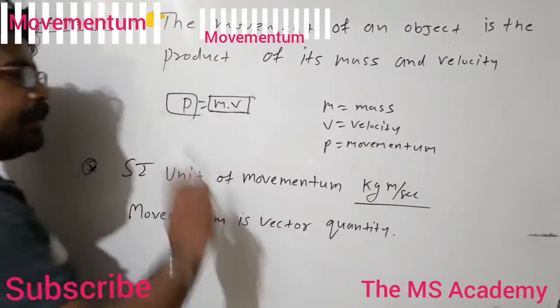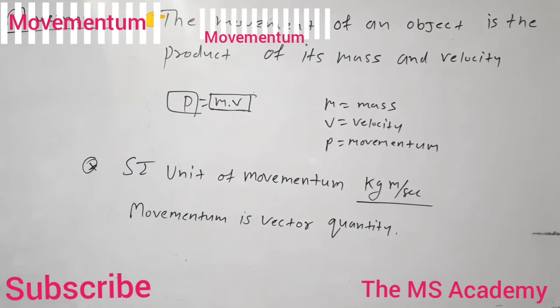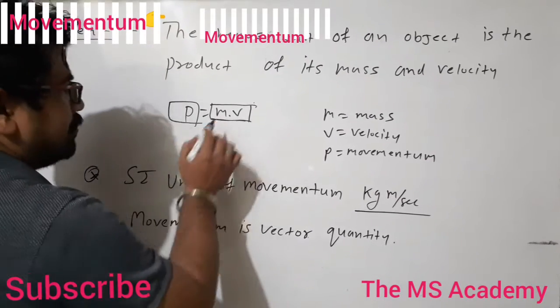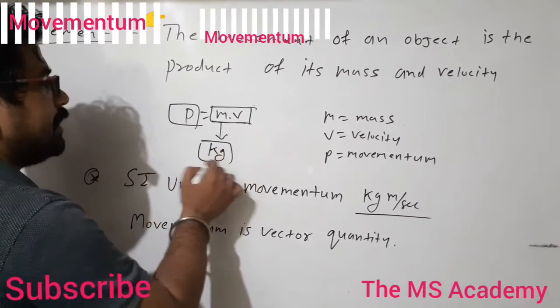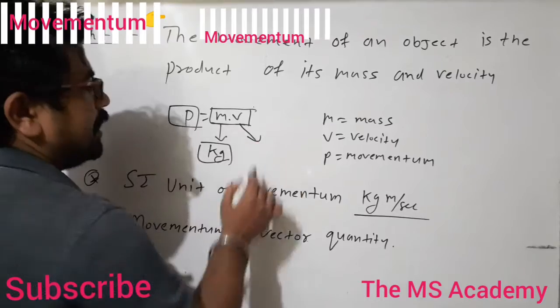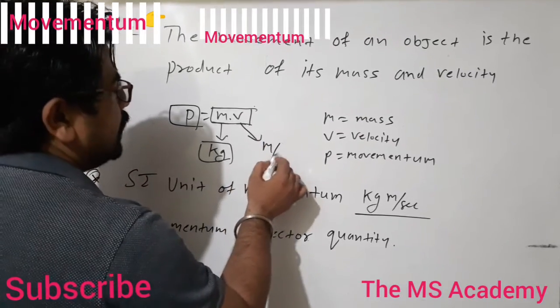SI unit of momentum: the SI unit of mass is kg, the SI unit of velocity is meter per second.